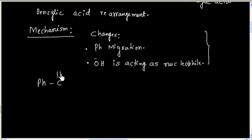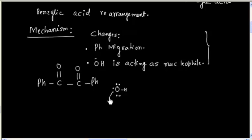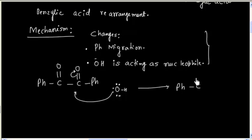In the first step, OH minus will act as nucleophile and it will attack on this carbonyl carbon. This opens up, and we will have this intermediate.